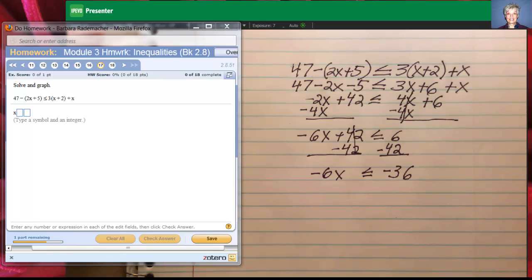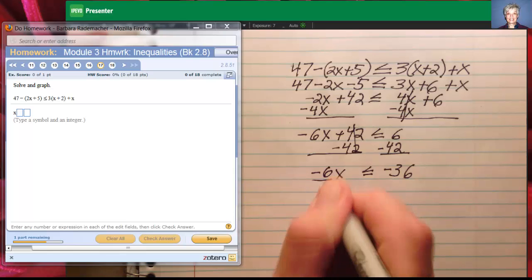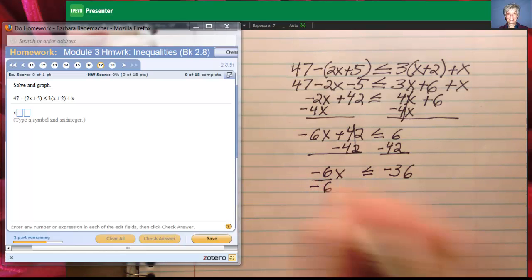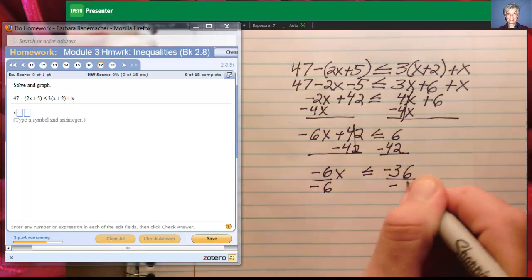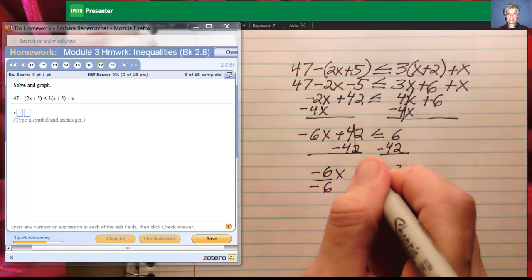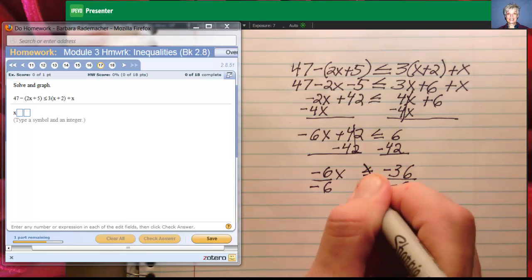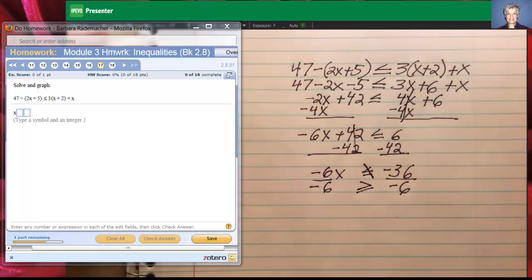Now just like with an equation, I'll divide both sides by negative 6. But here is where inequalities, all inequalities are different from all equations. When I divide by a negative number, I have to turn my sign around the other way. Turn around. Don't drown. Must be applicable somehow.